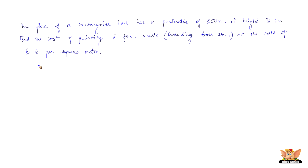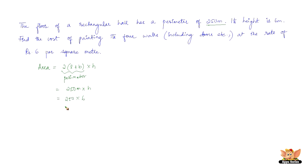Here, the length and breadth are not given individually — instead, the perimeter of the rectangular hall is given as 250 meters. The area of the four walls is the lateral surface area: 2 × (length + breadth) × height. Since 2 × (length + breadth) is the perimeter, which is 250 meters, the area of the four walls = 250 × height = 250 × 6 = 1500 square meters.